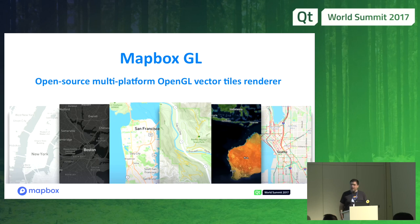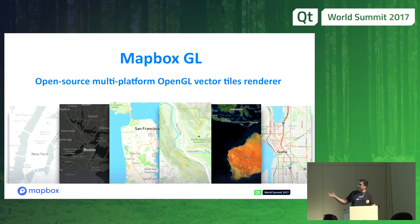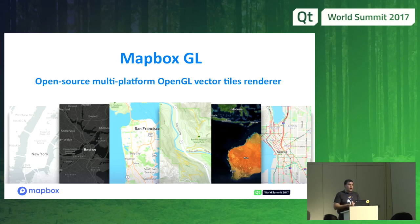The vector tile data itself is also open — the style specification and vector data specifications are all open. In theory, if you want to compete with Mapbox, everything is there and available. But what makes this special is that we use the same core engine across all platforms: the Qt location plugin, Android SDK, iOS SDK, Node bindings, and recently-released React Native. We support a wide range of platforms and operating systems, including Windows, Linux, and iOS.